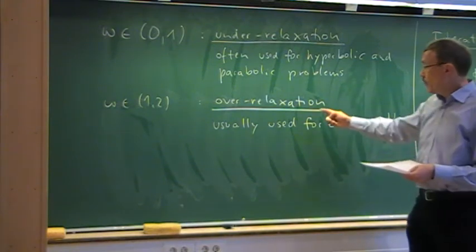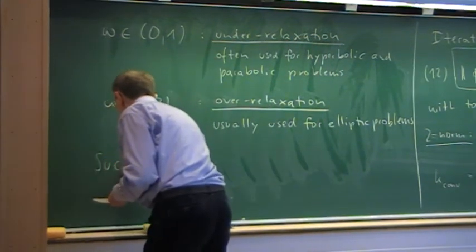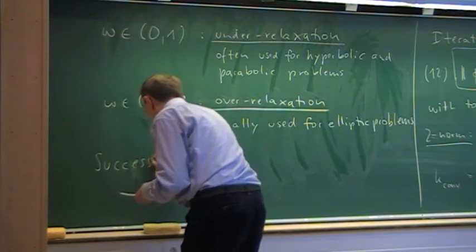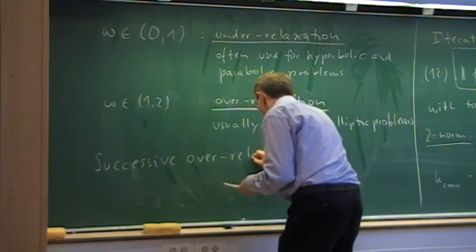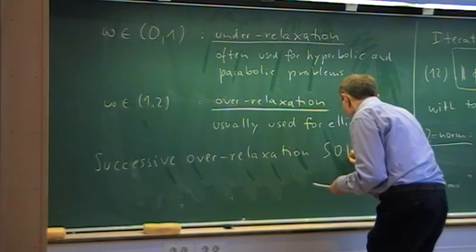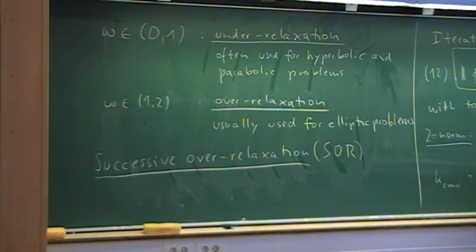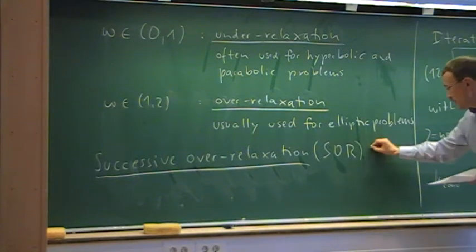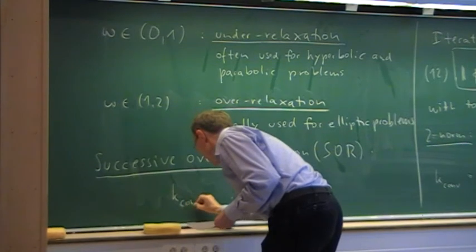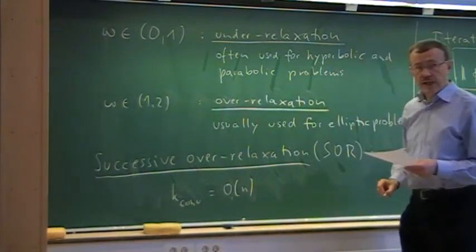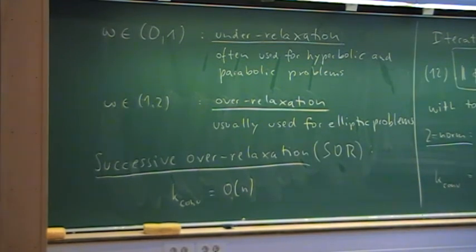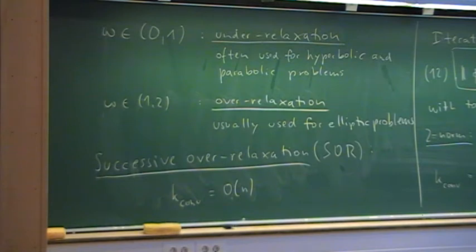One important example is Successive Over Relaxation, abbreviated SOR. SOR can be used for very special elliptic problems — only a few of them. But when it can be used, it has a nice property: the number of iterations needed for convergence is not O(n²) but O(n). So this is much faster than Jacobi or Gauss-Seidel. It is essentially a combination of point Gauss-Seidel with a very clever choice of omega, though we don't treat the theory here.